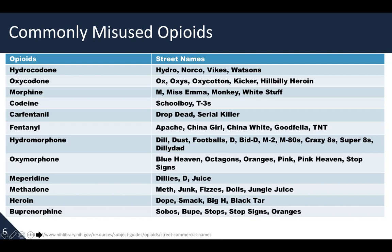Oxycodone is often heard called oxys, ox, oxy cotton, or hillbilly heroin because of its origination with the misuse and development of opioid use disorder predominantly in the Appalachian region. If you look at other synthetic opioids, such as carfentanil — the opioid used by veterinarians as an anesthetic — it is called on the street 'drop dead' and 'serial killer.' It's important to note that methadone's street name can also be called 'meth,' which could be confused with methamphetamine, a stimulant and not an opioid, so you want to make sure you clarify with your patient which meth they're talking about.